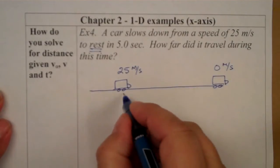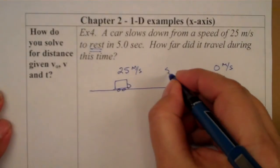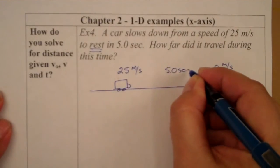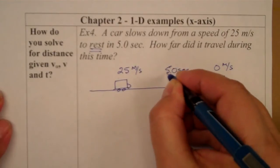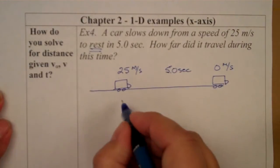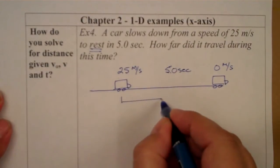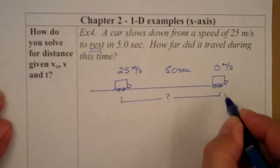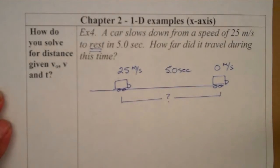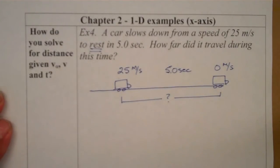The time to do this is 5.0 seconds, and what we don't know is how far it covered. What was the distance during those five seconds? I start from 25 meters per second, slow down to 0 meters per second, and I'm asking how far did I travel during this time.